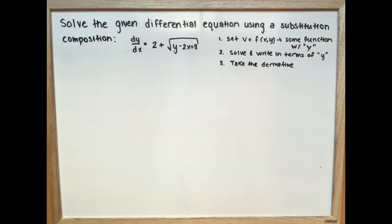Solve the given differential equation using a substitution composition. dy over dx is equal to 2 plus the square root of y minus 2x plus 3.